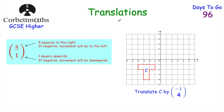When we translate a shape we just move it or slide it across the grid — so many squares to the right, left, up, or down. When describing translations we use a translation vector: one number above another in brackets. For example, (5, 1) means translate 5 squares to the right and 1 square up. The top number tells us left or right — positive means right, negative means left. The bottom number tells us up or down — positive means up, negative means down.